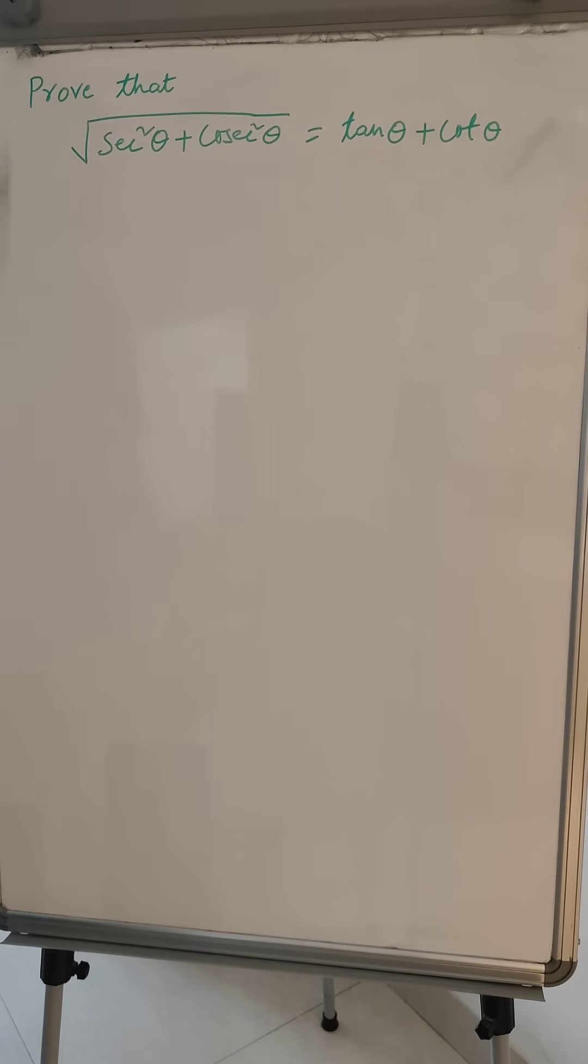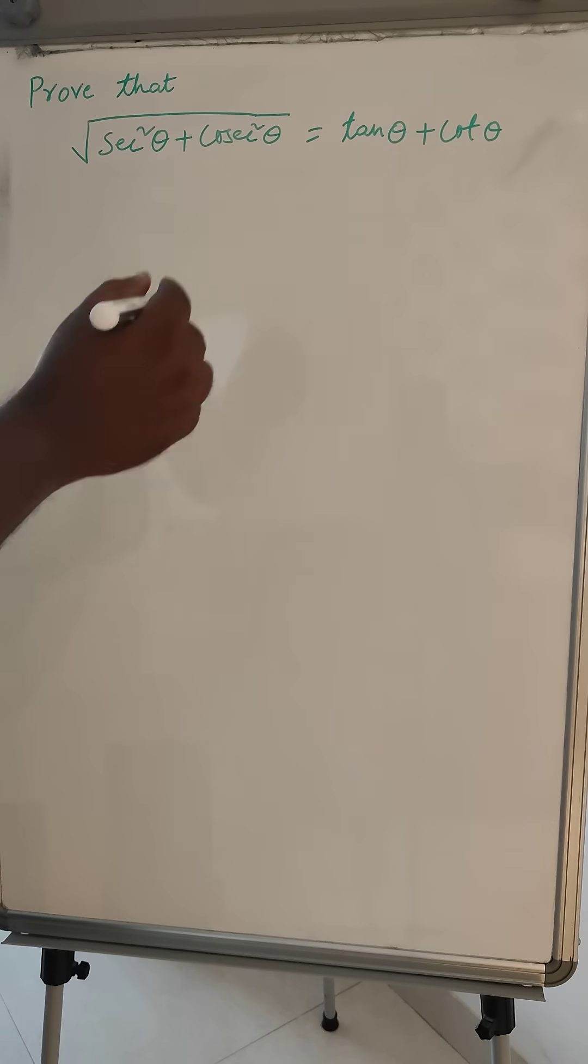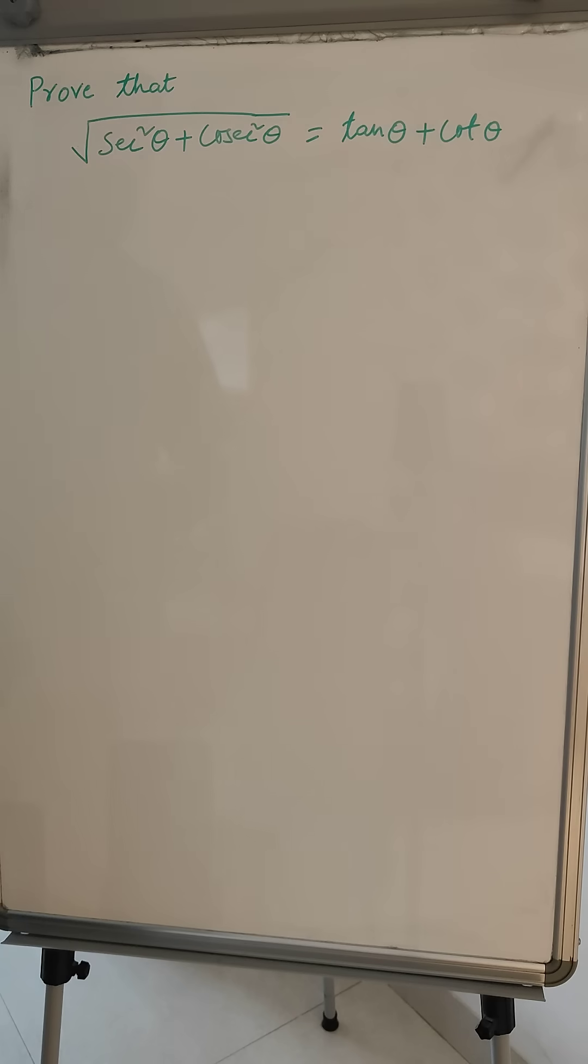Hi everyone, so today we have one trigonometry problem where we have to prove that square root of sec square theta plus cosec square theta is equal to tan theta plus cot theta.